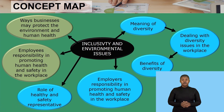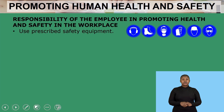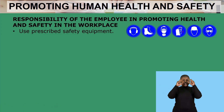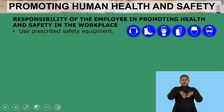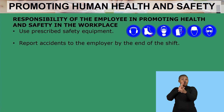We now look into the employees' responsibility — what is your responsibility as an employee in promoting human health and safety in the workplace? The first responsibility of the employee is to make sure they use prescribed safety equipment: as you can see, we have gloves, glasses, and safety boots. They should also report accidents to the employer by the end of the shift.